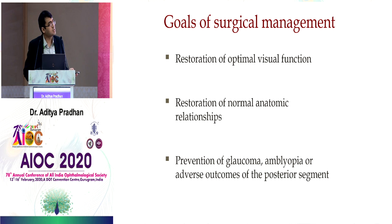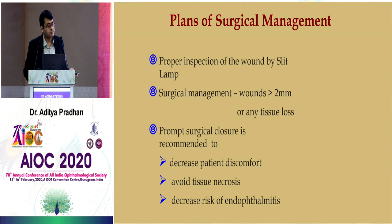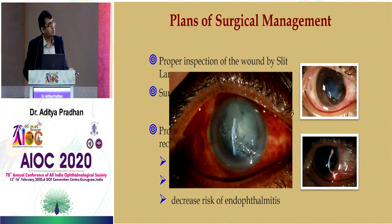Surgical goals include restoring visual function as far as possible, restoring normal anatomy and contour of the globe, and long-term prevention of glaucoma, amblyopia (in pediatric patients), and posterior segment pathologies. Inspect the wound at the slit lamp — note any tissue loss and wound size — and perform prompt surgical closure to decrease discomfort, avoid necrosis, and decrease the risk of endophthalmitis.